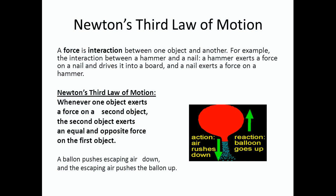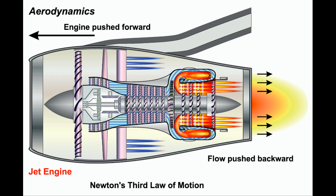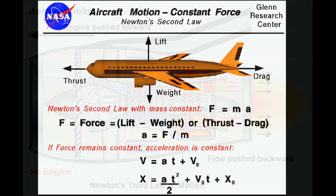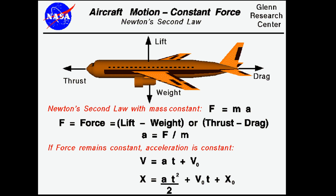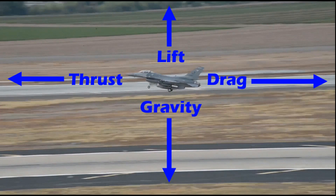As they push this mass of air backward, the engine and attached plane moves forward. The harder the engine pushes, the greater the mass of air it moves, and the faster the acceleration of the plane. This is Newton's second law. Gravity, lift, drag, and thrust are the four basic forces.